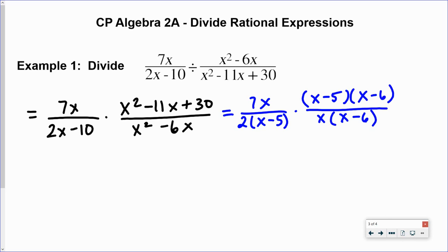Now we're going to multiply these expressions together. So that's going to give us 7x times x minus 5 times x minus 6.